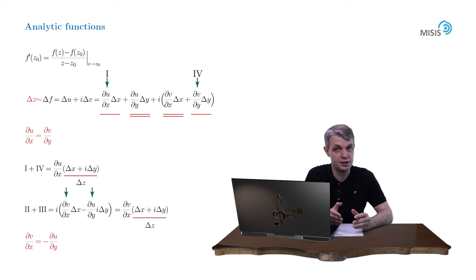This way our differential of function delta f is rewritten as du/dx plus i dv/dx times delta z. And naturally the limit of delta f and delta z becomes independent of delta z and well defined.